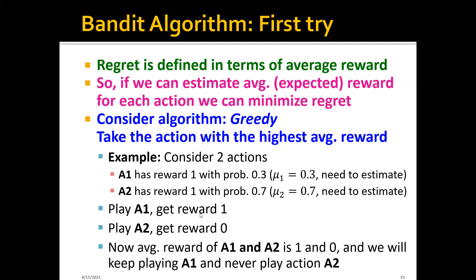But as you can see, this is actually a very bad strategy because A1 has a much lower expected reward than A2. Because 70% of the time, if you play A2, you'll get a reward of one. But for A1, it's only 30% of the time. So this is a very bad strategy if you use a greedy algorithm.